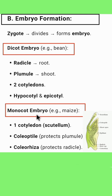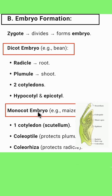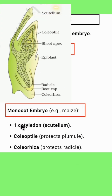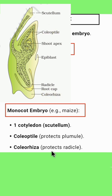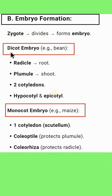In the case of a monocot embryo, only one cotyledon is present, called the scutellum. In monocot embryo, the coleoptile protects the plumule and the coleorhiza protects the radicle. An example of a dicot embryo is bean, and an example of a monocot embryo is maize.